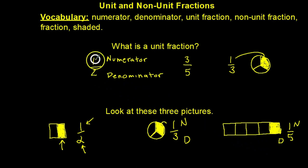So a unit fraction is a fraction which always has one as the numerator and a non-unit fraction is a fraction that has any other number which is bigger than one as the numerator.